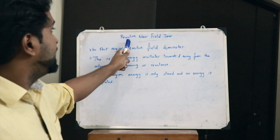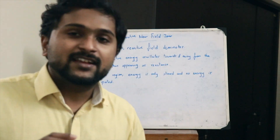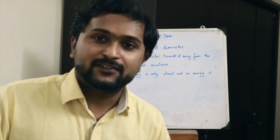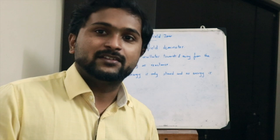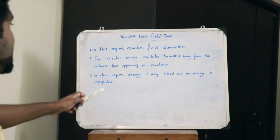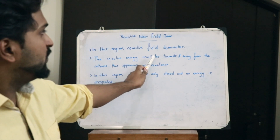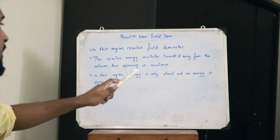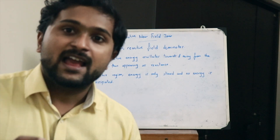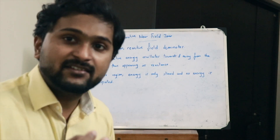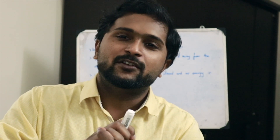The first we have is the reactive near field zone. In this kind of field zone, the reactive field dominates over the radiative field. The reactive energy oscillates towards and away from the antenna, thus appearing as reactance. In this region, energy is always stored and no energy is radiated outwards.